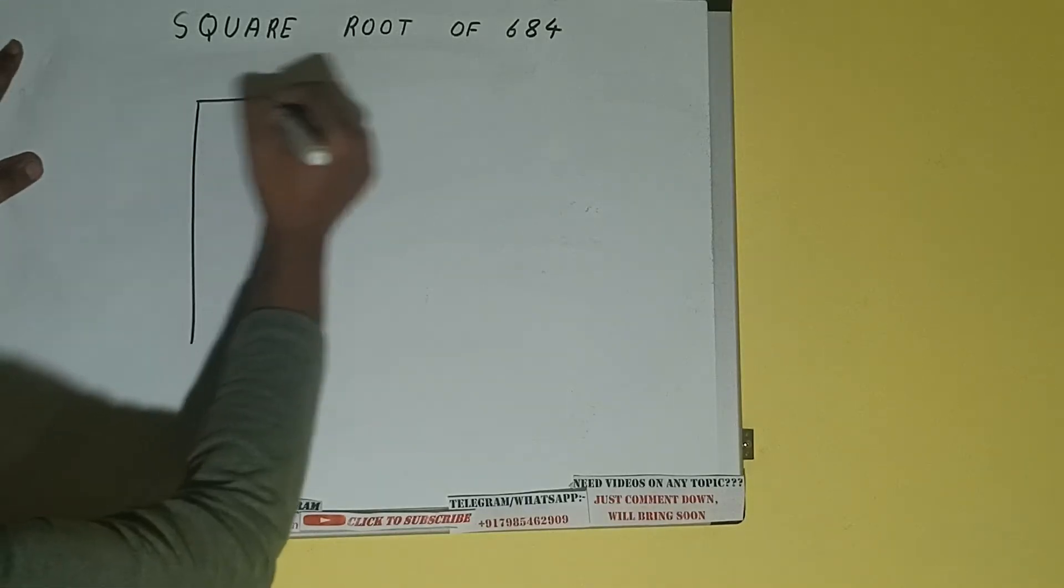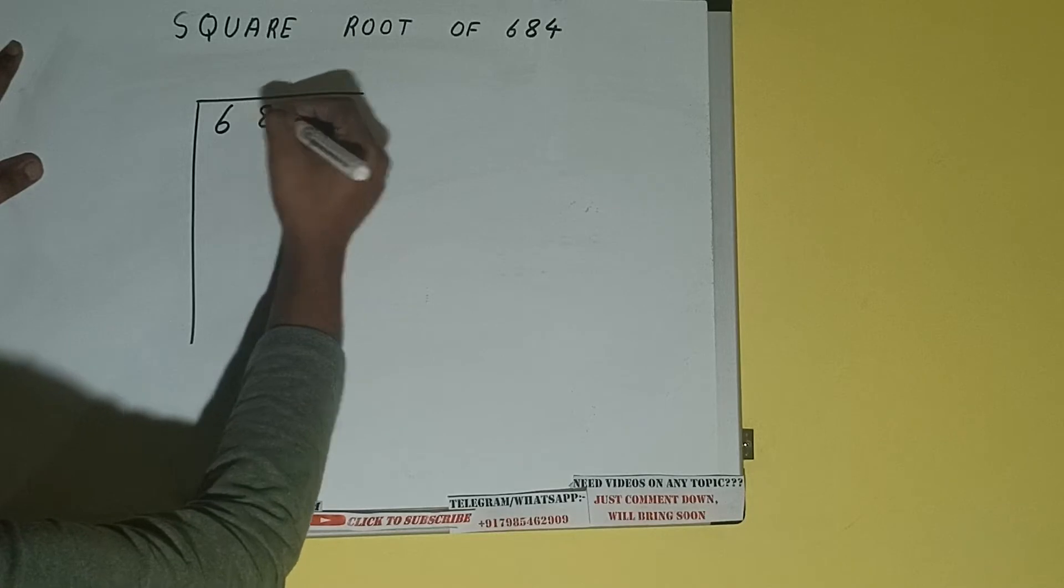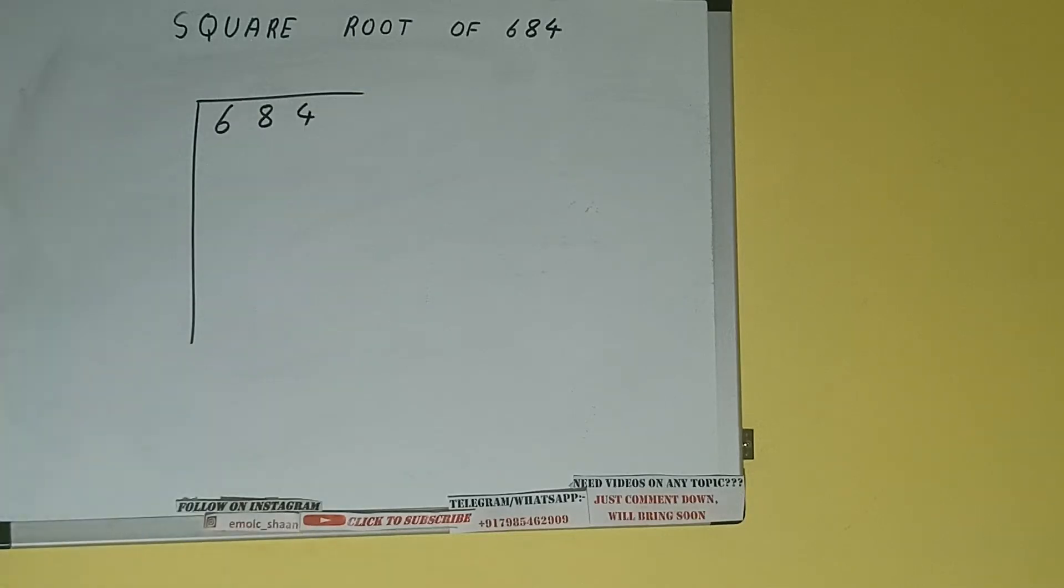First of all, we need to write the number like this. The next thing we need to do is form pairs from the right-hand side. So one pair will be this, and this six will be left out. So first we'll write this six, and then we'll bring down the pair.